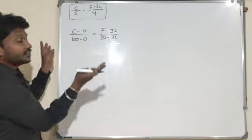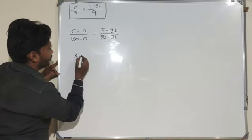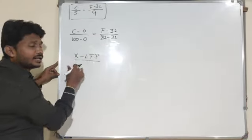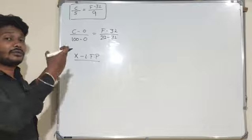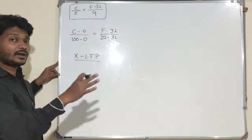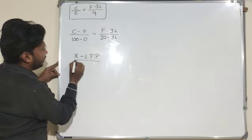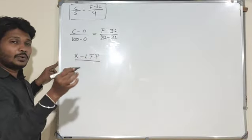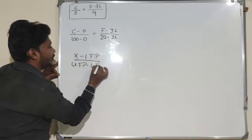In general, taking X as the temperature — whether in Celsius or Fahrenheit — the formula is: X minus lower fixed point, divided by upper fixed point minus lower fixed point, equals a constant. This constant is applicable for all kinds of scales.